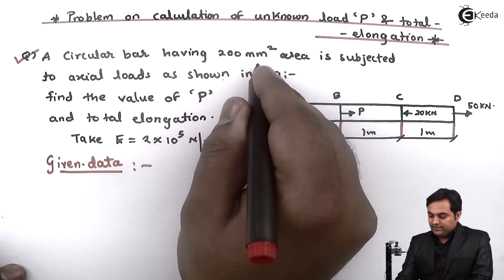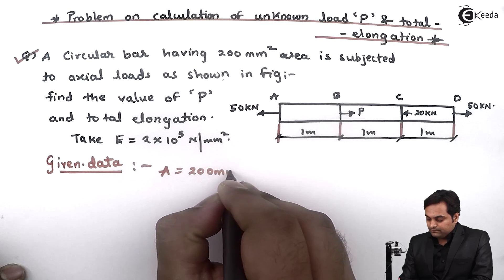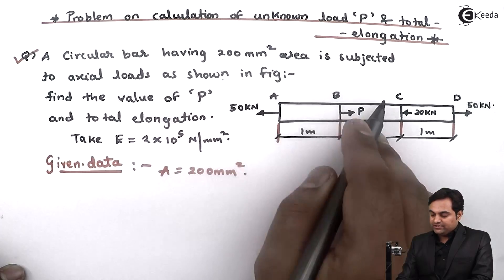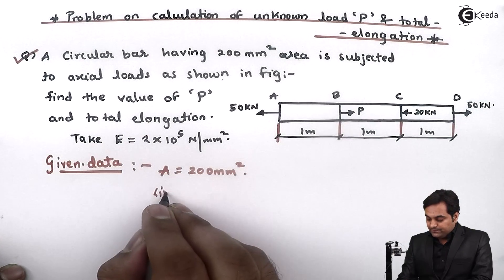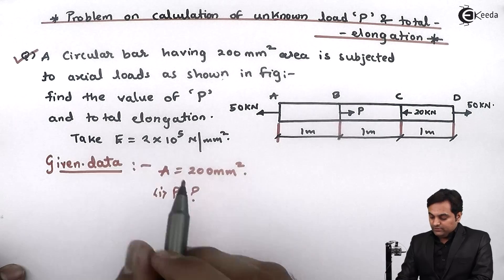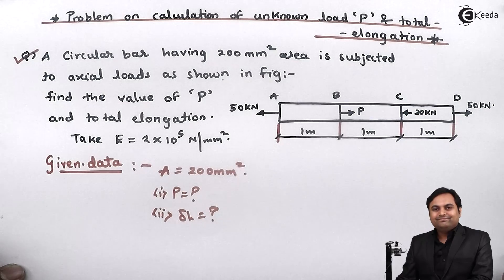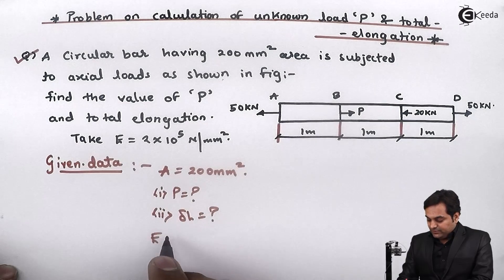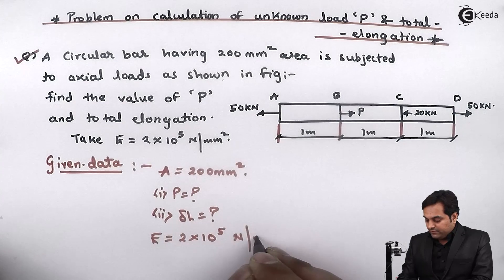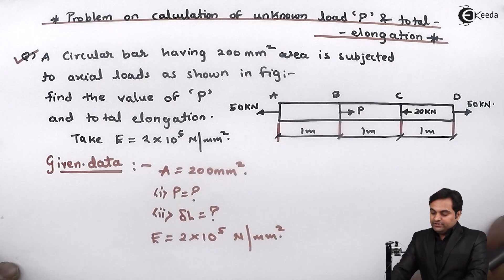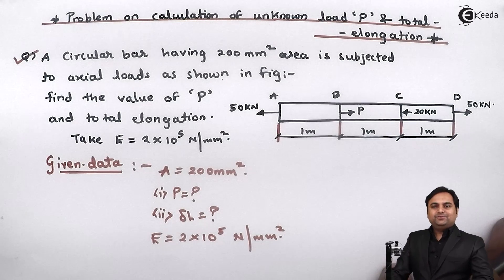A circular bar having 200 mm square area is subjected to actual loads as shown in figure. Find the value of P — that is the first question — and total elongation delta L — that is the second question. Take Young's modulus E as 2 into 10 raised to 5 Newton per mm square.